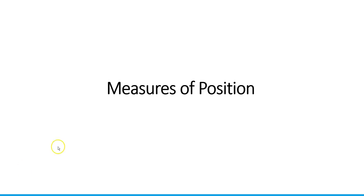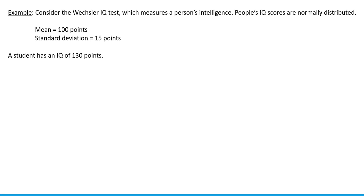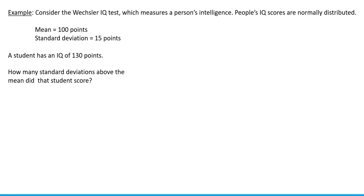In this example we're going to talk about the Wechsler IQ test, which measures a person's intelligence. People's IQ scores are normally distributed, the mean score is 100 points, and the standard deviation — something that measures the spread — is 15 points. So let's say a student's IQ is 130 points. The question is: how many standard deviations above the mean did that student score?